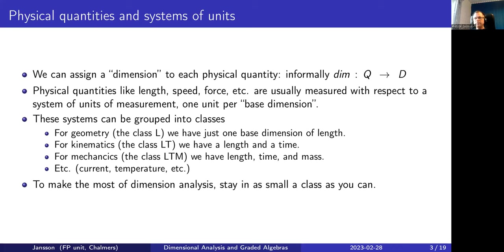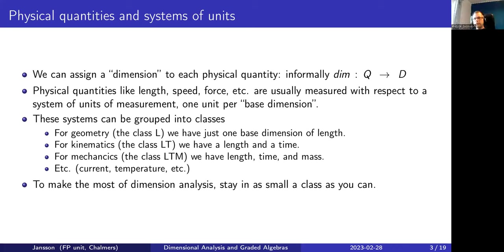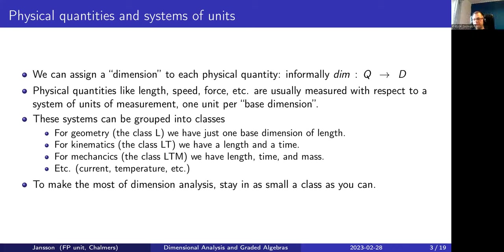A question came up: what do you do with angles in geometry? According to the SI system, angles are dimensionless — they're just a rescaling, a ratio between lengths. The distinction between radians and degrees is a choice of units within a dimension, not a difference in dimension.